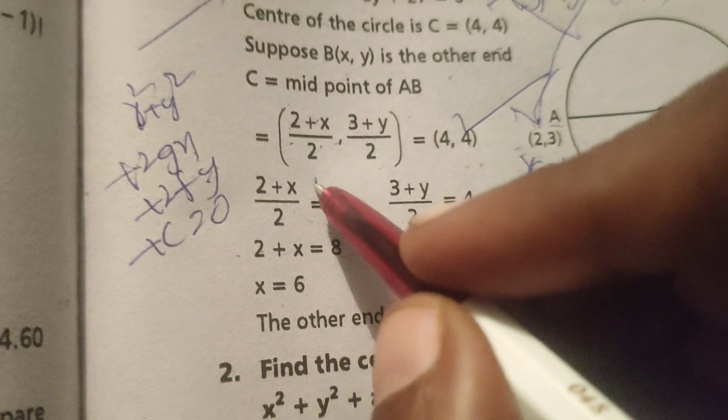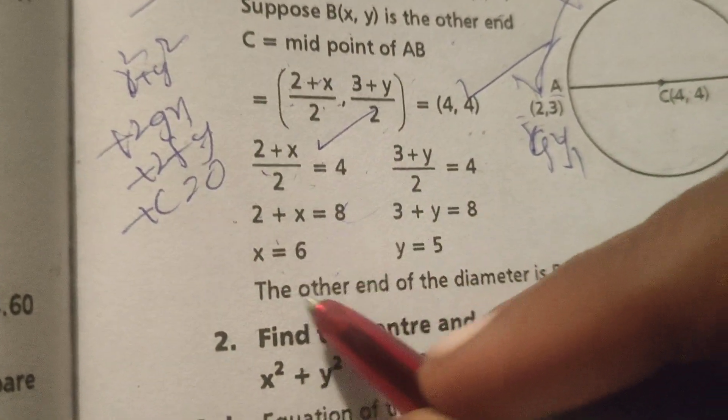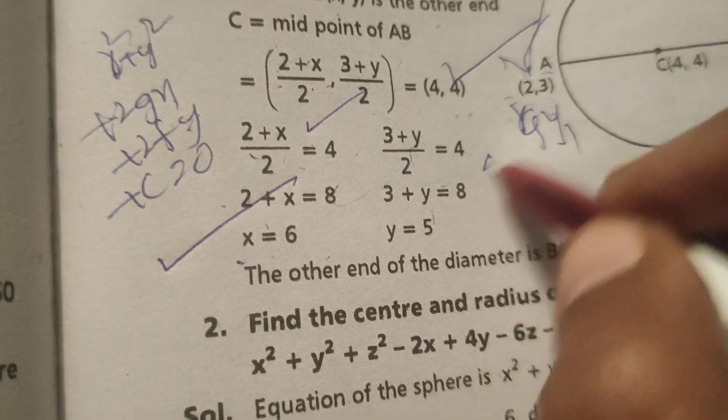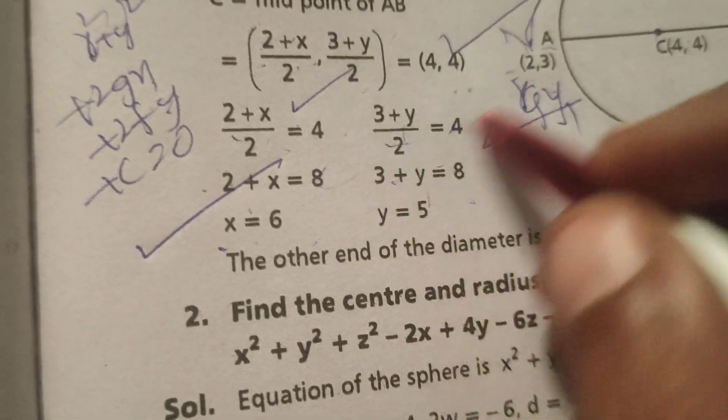(2 + x)/2 = 4, so 2 + x = 8, therefore x = 6. (3 + y)/2 = 4, so 3 + y = 8, therefore y = 5.